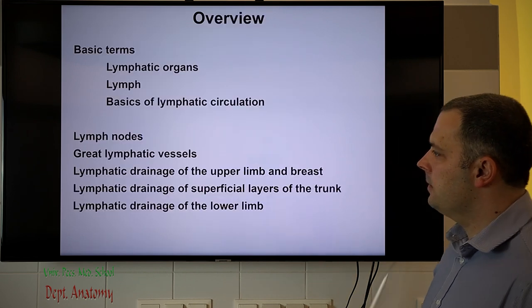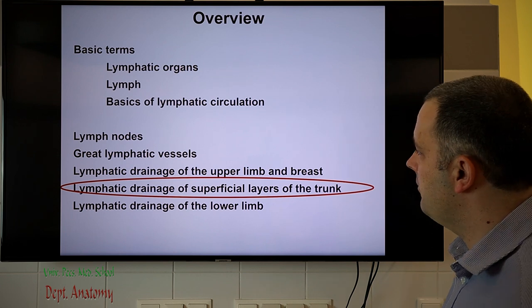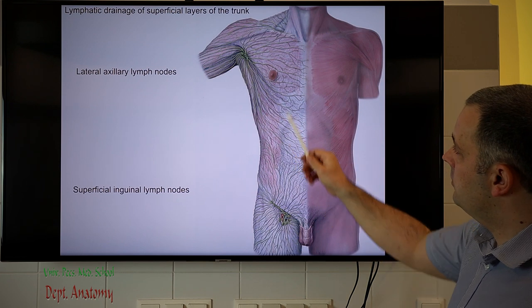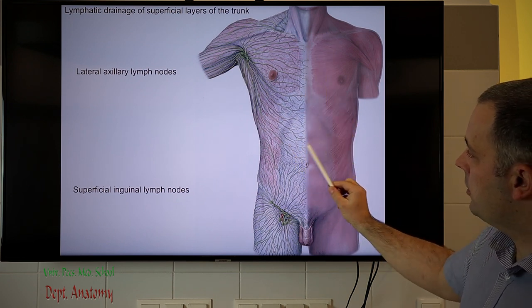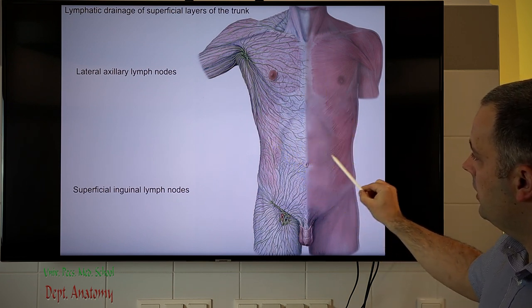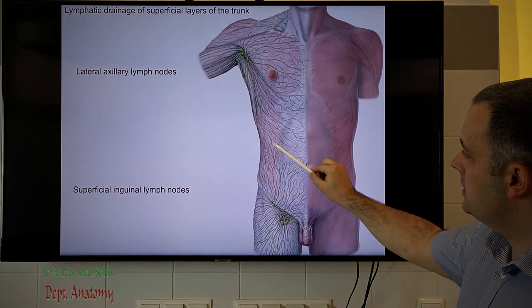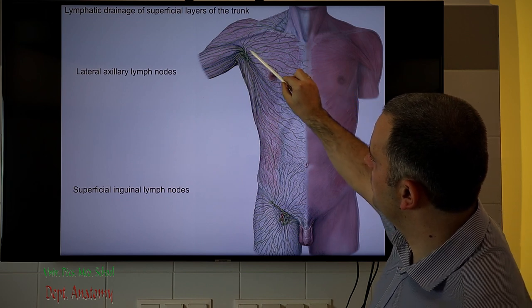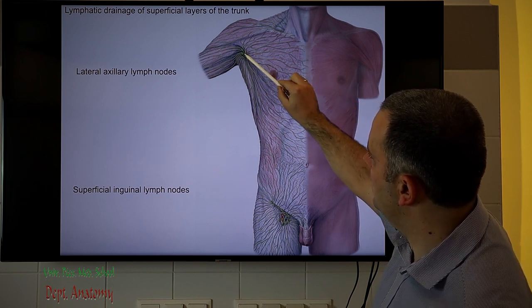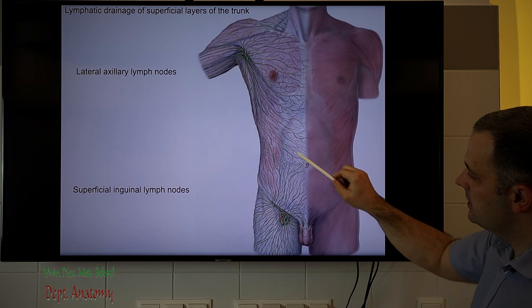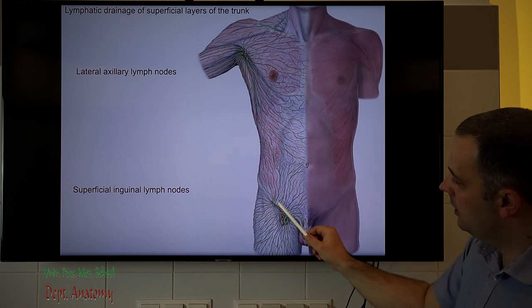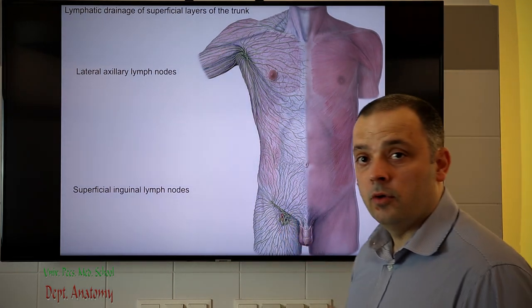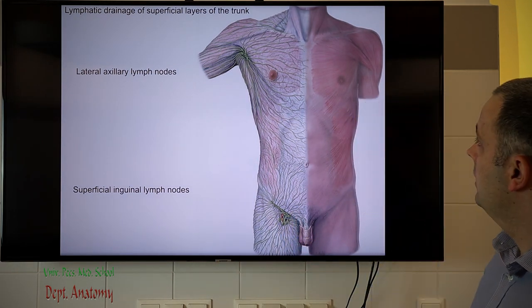The lymphatic drainage of the trunk is quite simple. The key point is the umbilicus, which serves as a border: above the umbilicus, lymph vessels drain towards the lateral axillary lymph nodes; below it, lymph fluid is collected towards the superficial inguinal lymph nodes, which also relate to the lower limb.